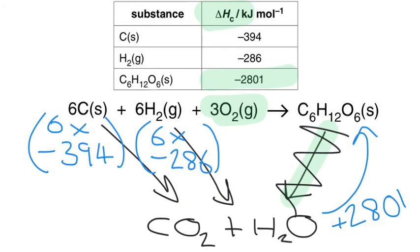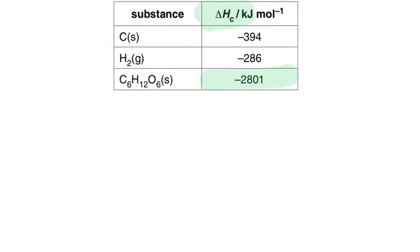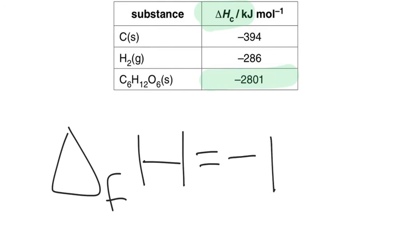To calculate the enthalpy change for the top reaction then, for that enthalpy of formation for glucose, I'm going to use this enthalpy of combustion data and I'm literally going to take 6 times minus 394, add 6 times minus 286, add 2801, and that's going to give me the enthalpy change. The enthalpy change of this reaction was, and remember it was an enthalpy of formation, it makes no difference but it was, and the value was minus 1279.